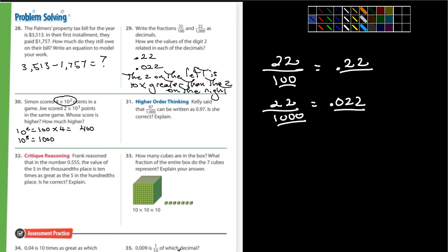And Joe scored 2 times 10 to the third. That's going to be 1,000 times 2 or 2 times 1,000. That's going to be 2,000. Whose score is higher? Well, obviously, Joe, Joe's score is higher. And how much higher? Well, how much higher is 2,000 from 400? What's the difference? You've got to figure that one out. 2,000 minus 400 equals something. That's how much higher his score is.